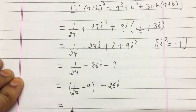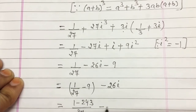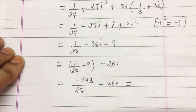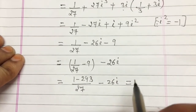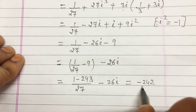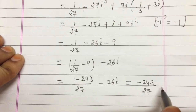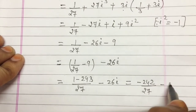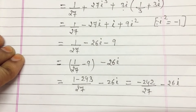Now take the LCM in the real part only. LCM is 27, so it is (1 − 243)/27 minus 26i, giving us minus 242/27 minus 26i. This is the answer of question 9.